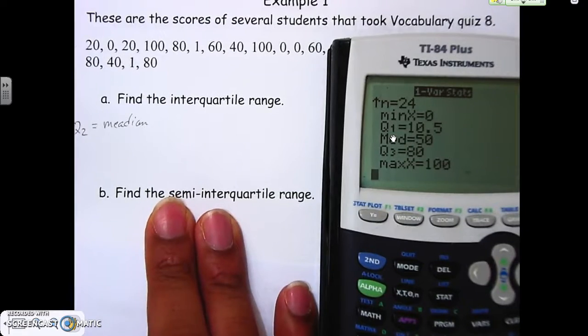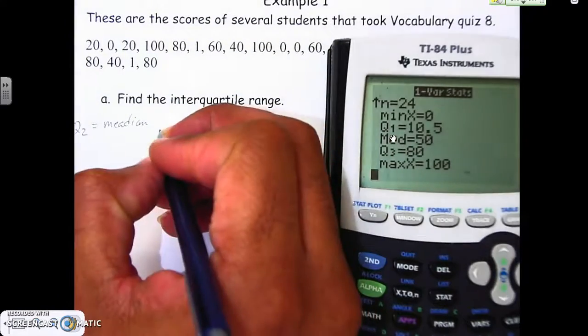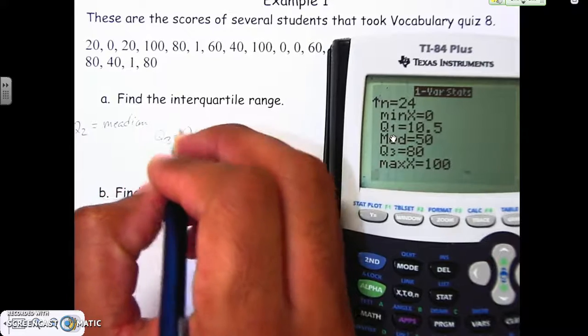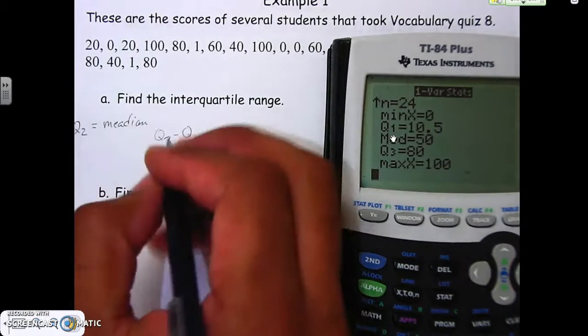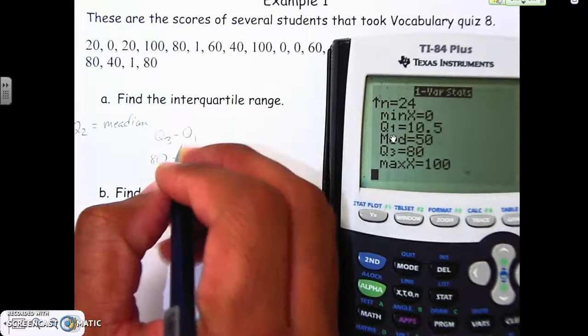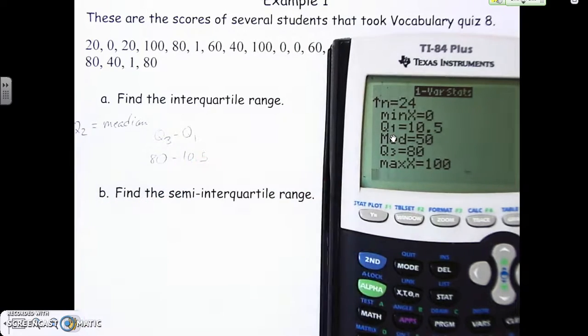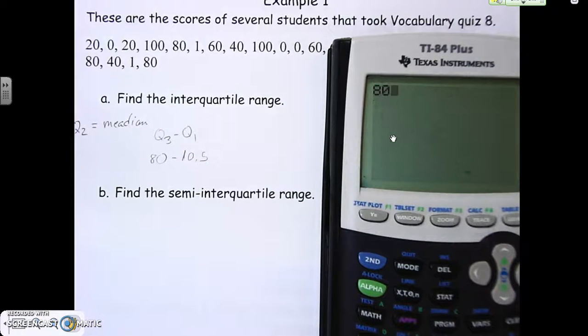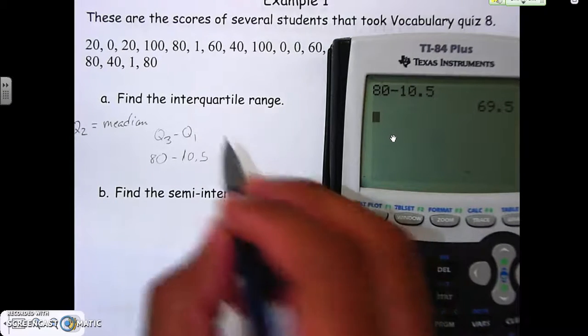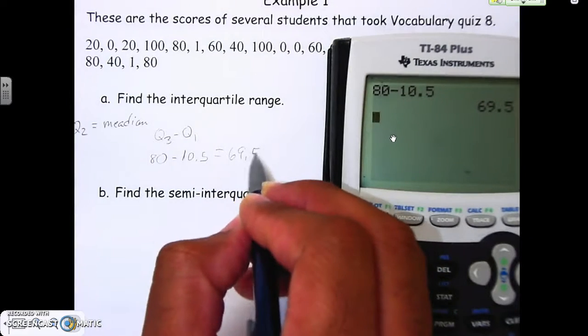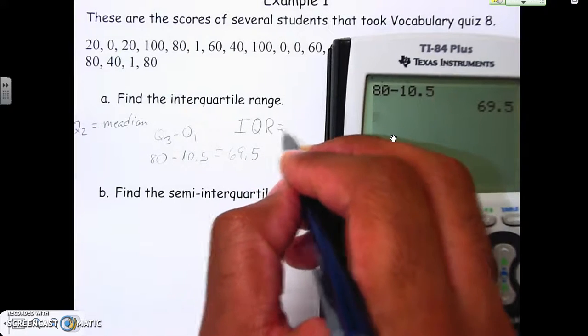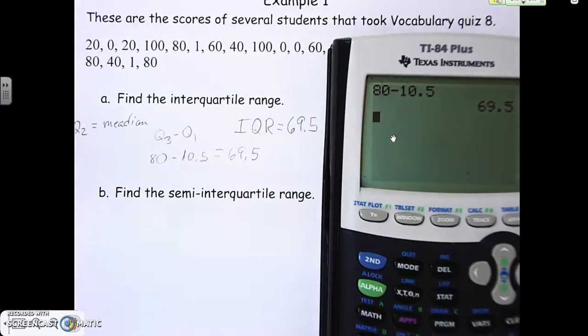Now the interquartile range, what do we do? We do Q3 minus Q1. Q3 is 80, Q1 is 10.5, and all we do is subtract those two numbers. 80 minus 10.5, and we get 69.5. So our IQR is 69.5.